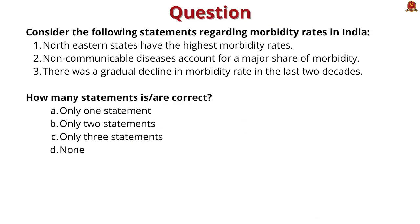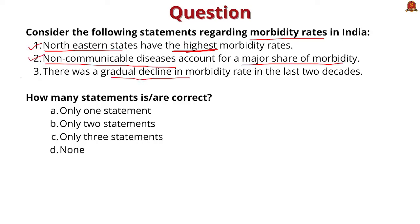Now for the prelims practice questions. Question 1 — consider statements regarding morbidity rates in India: Statement 1 says northeastern states have the highest morbidity rates — this is incorrect; Kerala has the highest morbidity rate, and northeastern states have the lowest. Statement 2 says non-communicable diseases account for a major share of morbidity — this is correct. Statement 3 says there was a gradual decline in morbidity in the last two decades — this is incorrect; there has been a general rise. The correct answer is option A — only one statement is correct.